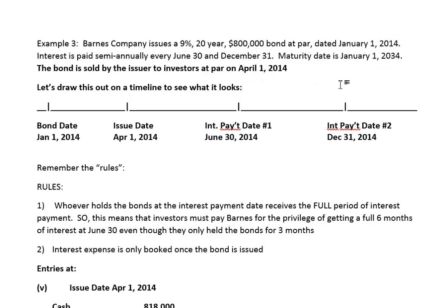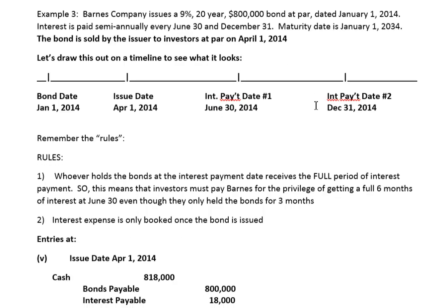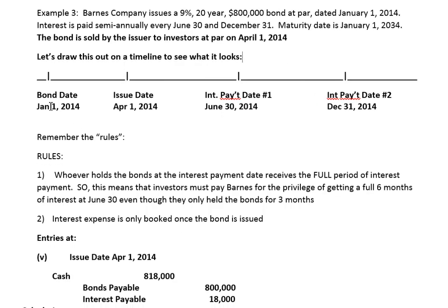If we look at the timeline now, we see that's our bond date and that's our issue date. From January 1st to April 1st — that's January, February, March — that's three months.